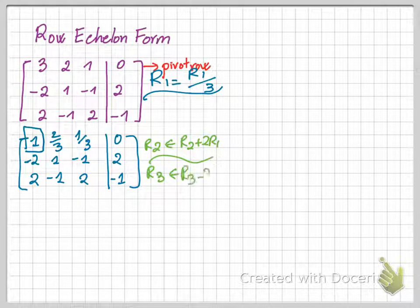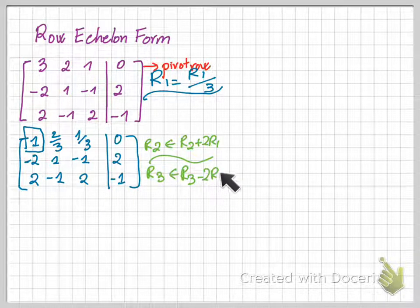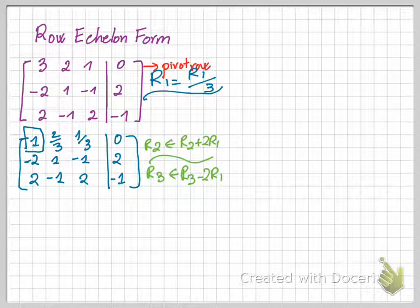In order to transform row 3, you take row 3 minus 2 row 1, which is the pivot row. Remember, you always want to use a pivot row to transform the rest of the rows.